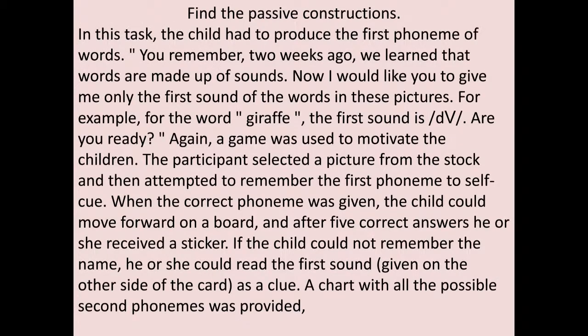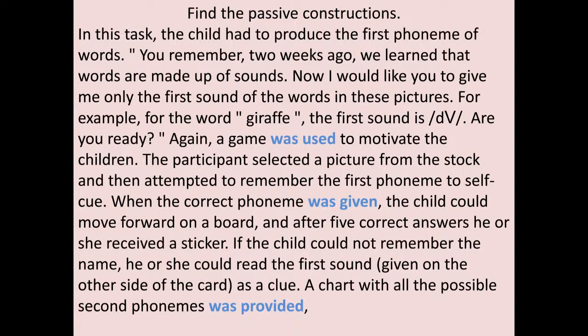Take this practice passage — there are three passive clauses in it. Pause the video and find three clauses that have an auxiliary verb 'be' and a lexical verb in past participle form. In each passive clause, you see 'was' (which is be), and then a past participle: 'used,' 'given,' 'provided.' Other clauses in the passage may have similar meanings, but only these three fit the grammatical characteristics.